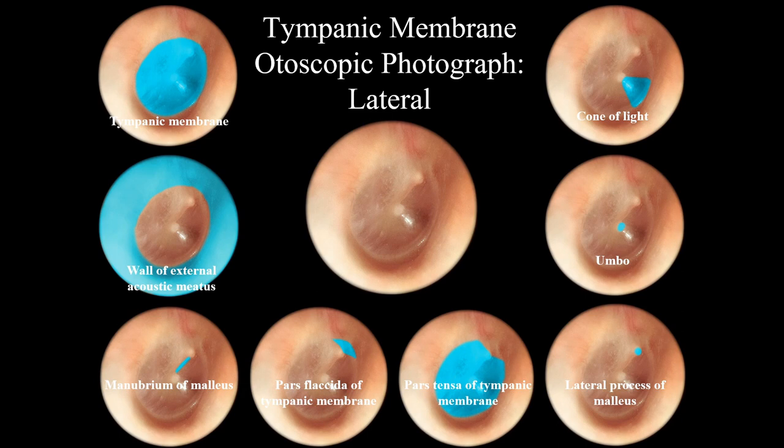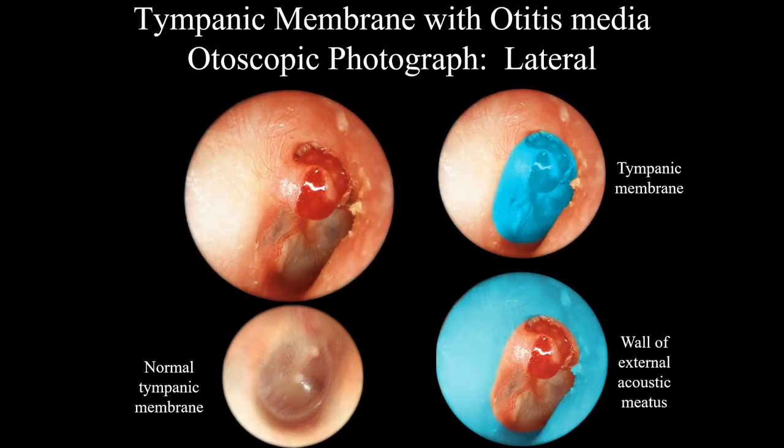The tympanic membrane is very thin and requires protection. Otitis media is a bacterial infection of the middle part of the ear — as can be seen in an otoscopic photograph showing infection and blood in the membrane.